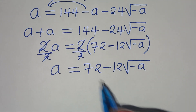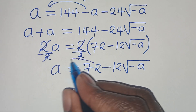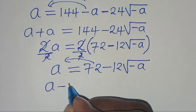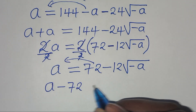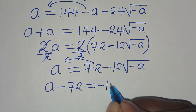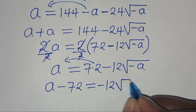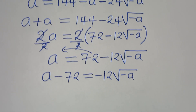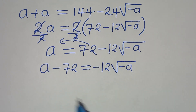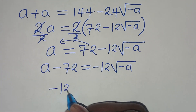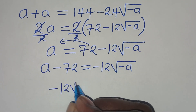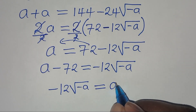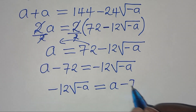The next step is to take 72 to the left-hand side, so that we have a minus 72 equals minus 12√(-a). We can rewrite this equation as minus 12√(-a) equals a minus 72.